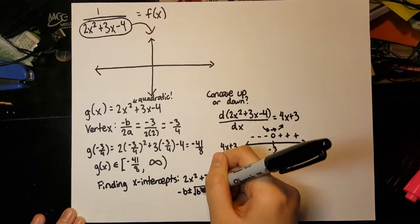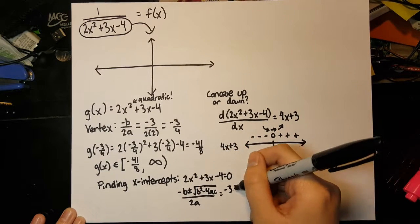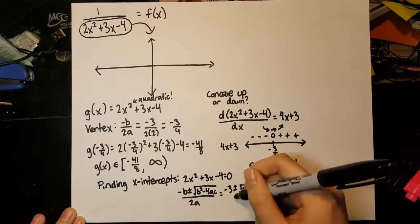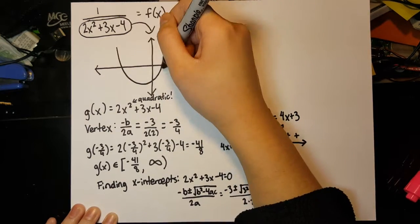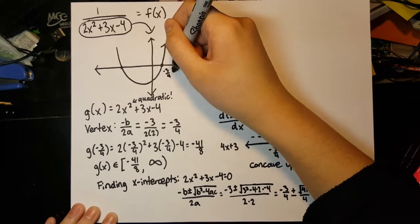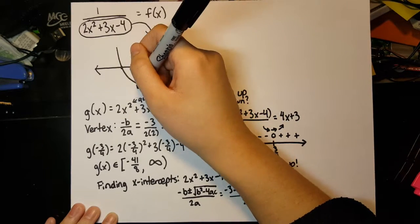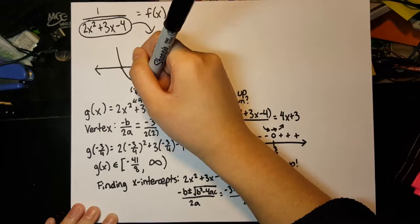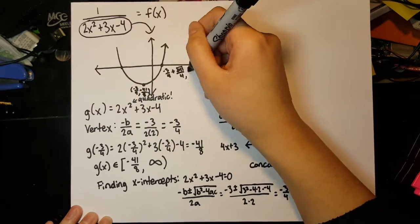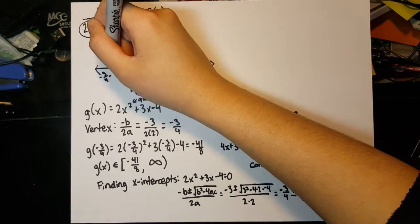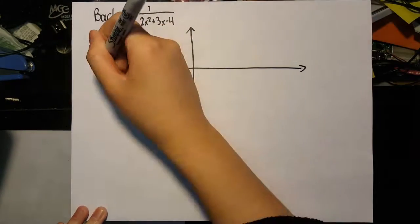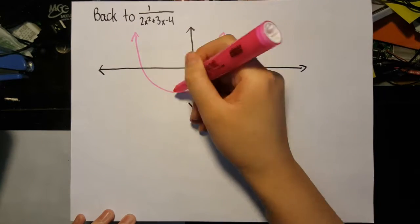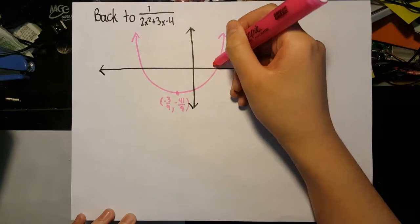We also know that because the denominator's range diverges to infinity, there will be a horizontal asymptote of 0. Looking at the region between x equals negative three-fourths minus square root of 41 over 4 and negative three-fourths plus square root of 41 over 4 on the graph of the denominator, the y values are negative. Because the vertex is the minima of the denominator's graph, it will be the maxima of the graph of 1 over the denominator, because the greater the magnitude of a denominator, the lower the value is.